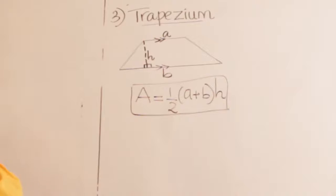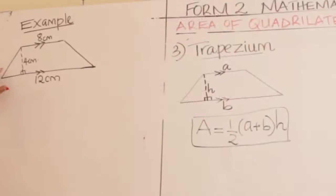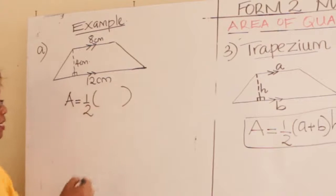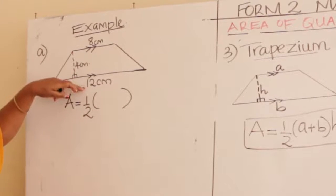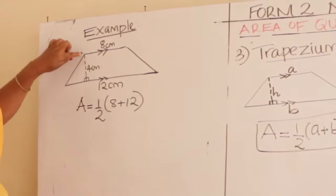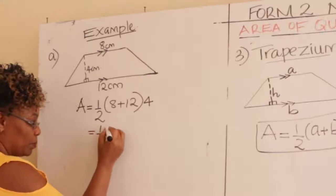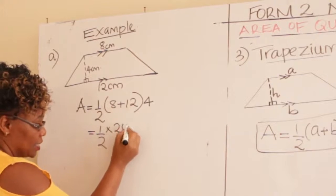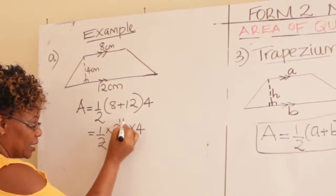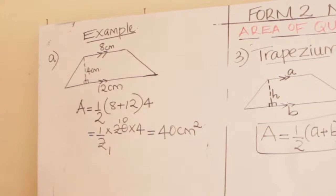Let us look at an example. The area of this trapezium is equal to a half, in brackets, the sum of the parallel lines — that is 8 plus 12 — multiplied by the perpendicular height, which is 4. This equals a half times 20 times 4, giving us 40 centimeters squared.